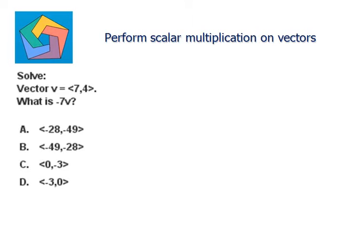So we need to multiply the vector v with the scalar negative 7. If we have a vector a as b comma c, then k times a will be equal to k times b comma k times c, where k is any scalar.